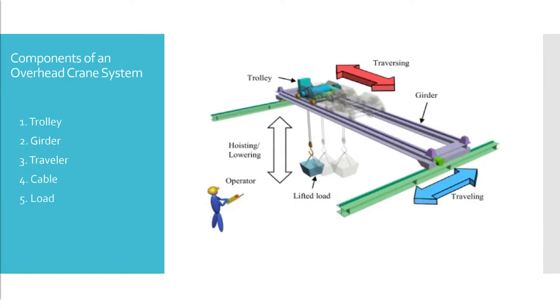An overhead crane consists of five main components. Firstly, the trolley is the main part of the crane which consists of a driving motor. Secondly, the girder serves as a guide for transversive motion depicted by the red arrow in the diagram on the right.